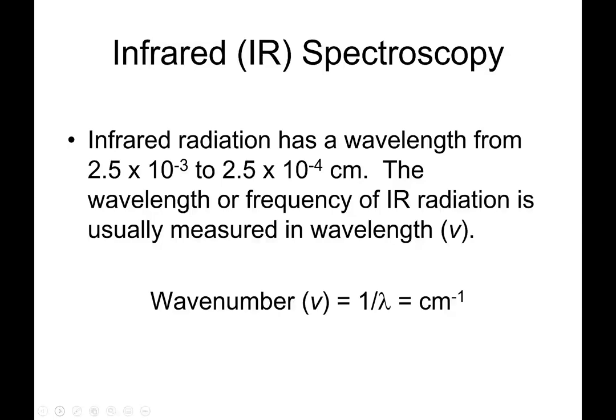We're going to spend only a small time on this because it's not the most powerful technique—although in forensics it is, and I'll go into that. So infrared radiation has a wavelength from 2.5×10⁻³ to 2.5×10⁴ centimeters. Normally when you've talked about wavelengths in the past, you've talked about nanometers. Centimeters is a unique unit, but this is organic chemistry, so nobody follows the rules.